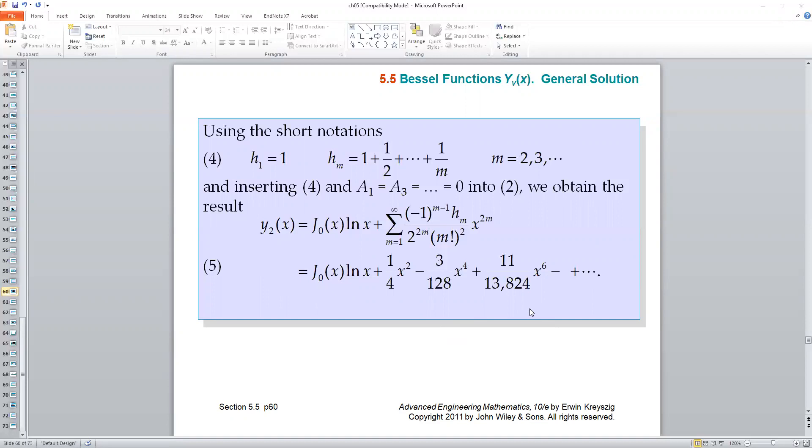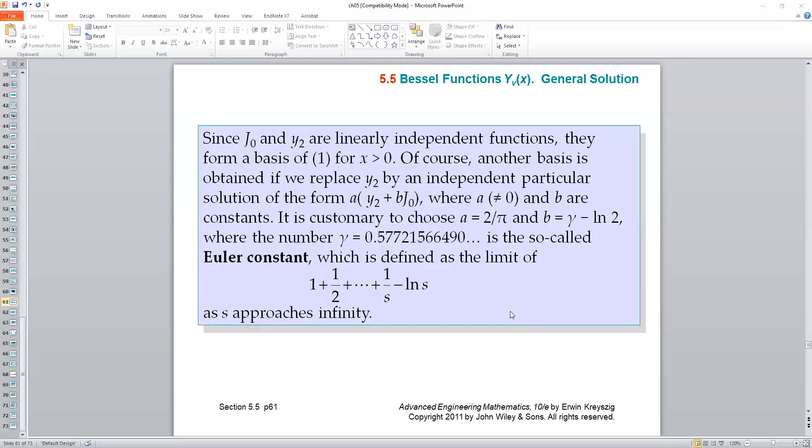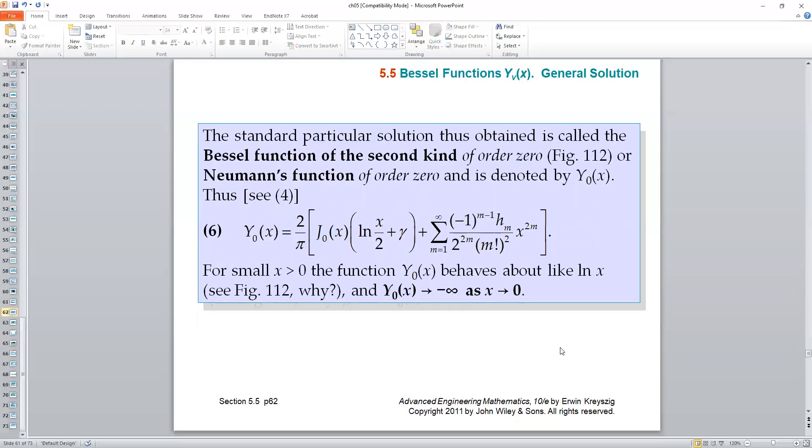The way to do it is linearly combine this Y2 and J and R in this format. And then by defining A and B separately as two constants, we should be able to generate Bessel function of the second kind of order 0 in this format. Notice a couple of things.